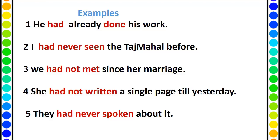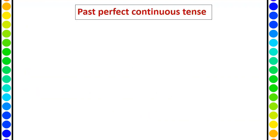So as mentioned, the clue words — already, before, since, till — are the words which suggest to us that we should use past perfect tense.